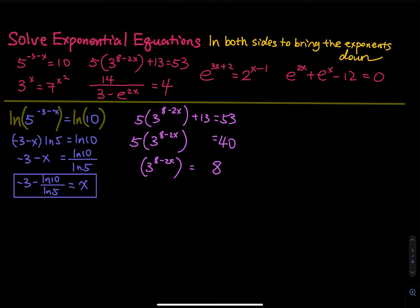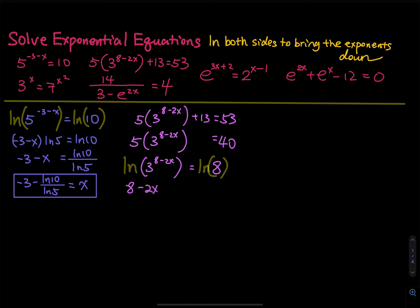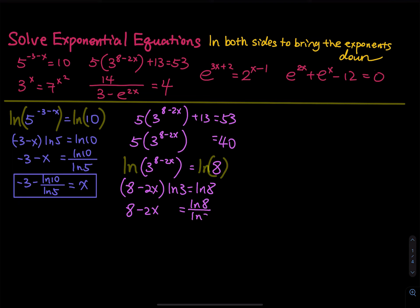Now is a good opportunity to ln both sides and carry the exponent down. So you have 8 minus 2x times ln3 equals to ln8. Divide both sides by ln3. You have 8 minus 2x equals to ln8 divided by ln3. Then subtract 8 on both sides and divide both sides by negative 2.